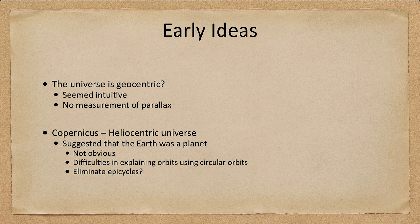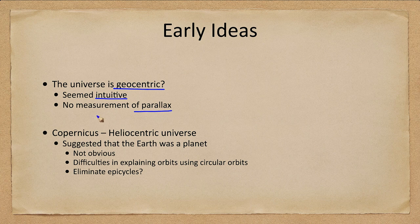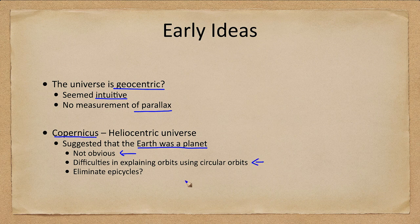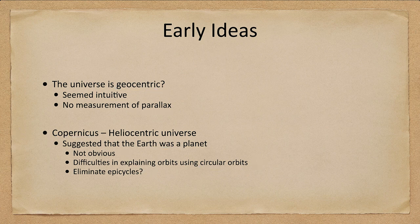So what do we see? Well first of all we talked about the universe being geocentric, and that was the belief of the early Greeks because it seemed intuitive. When you walk outside it does not feel like we are moving through space, and there was no measurement of parallax which would occur if the earth were moving. Now Copernicus and his heliocentric universe suggested that the earth was a planet. However it was not obvious — there were still difficulties in explaining how the planets moved using circular orbits, and he was not able to fully eliminate epicycles because he still depended on circular orbits.